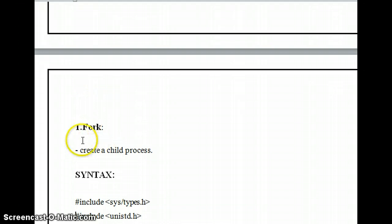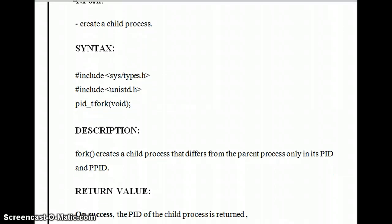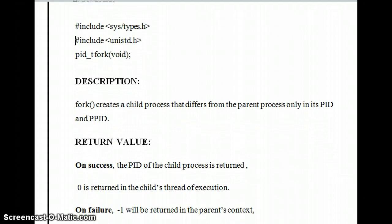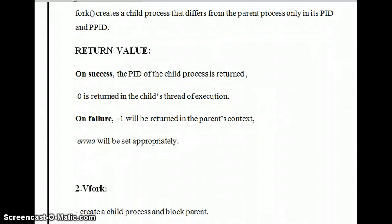First we will discuss the fork system call. It is used to create a child process — whatever the parent process is, it can create a child process. The syntax includes the header files sys/types.h and unistd.h. A process ID is taken and fork() is called with void. It creates a child process which is different from the parent process, and only its process ID and parent process ID are included.